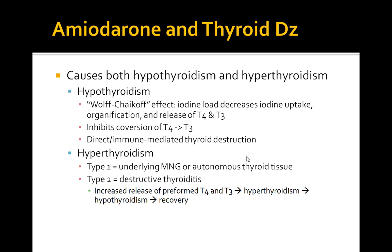In normal individuals, there's initially decreased T4, and then an escape from the Wolff-Chaikoff effect occurs, resulting in increased T4, decreased T3, and increased TSH. After one to three months, the TSH level will normalize. However, in susceptible individuals such as patients with subclinical Hashimoto's thyroiditis — identified by a positive anti-thyroid peroxidase antibody — they may not experience this escape effect.